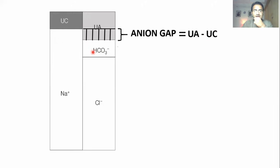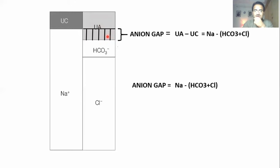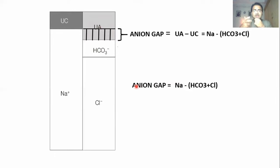What we can do instead is take sodium, add chloride and bicarbonate, and subtract them from sodium. If we add chloride and bicarbonate and subtract from sodium, we will get this part of the diagram. So: anion gap = sodium minus (bicarbonate plus chloride). That's how we calculate anion gap.